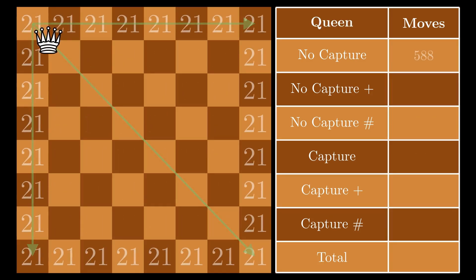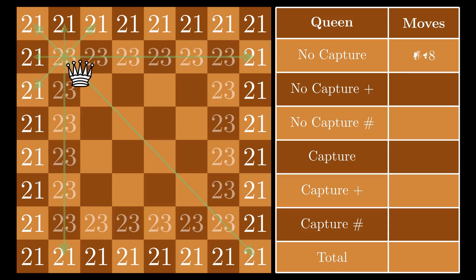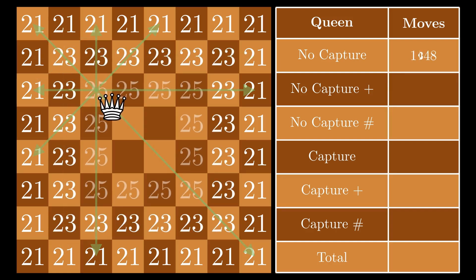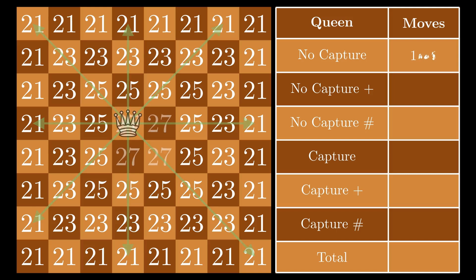Although maybe the queen is actually easier. She moves like a bishop and rook, so the total number of moves, 1,456, is simply the sum of bishop and rook moves. This value applies in all situations, and the queens unsurprisingly have the greatest number of potential moves at 8,736.